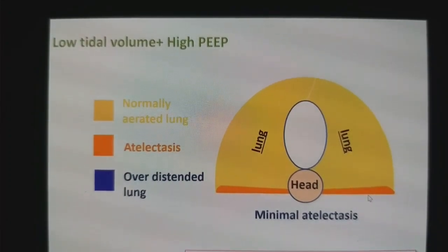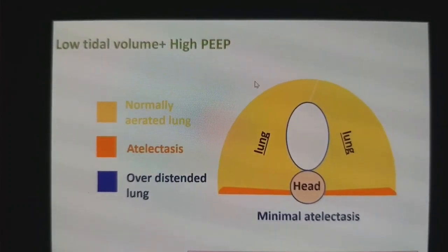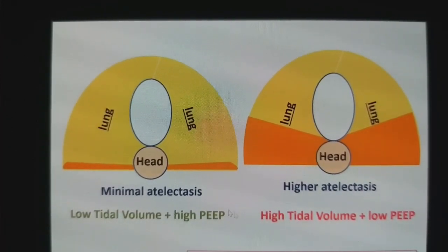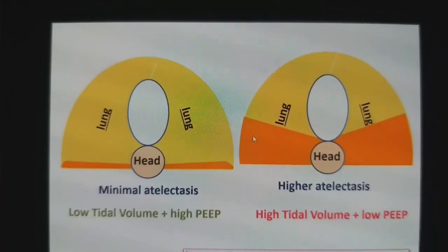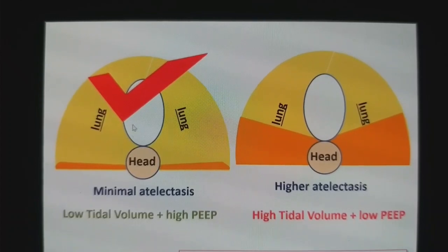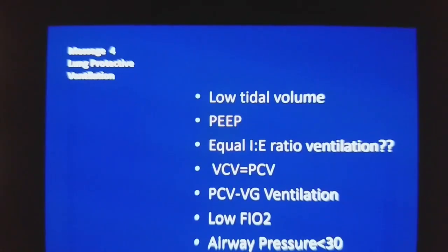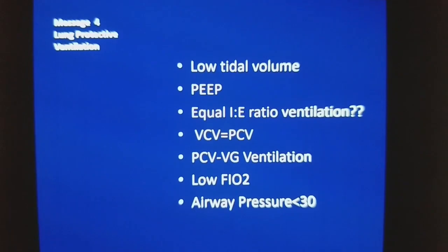That is the optimal method of ventilating a patient in the OR — low tidal volume with high PEEP. Look at this comparison: low tidal volume with high PEEP shows normal aeration, whereas high tidal volume with low PEEP shows the atelectatic area. So this is the optimal technique of ventilating a patient in the OR. Lung protective ventilation means: low tidal volume of 6 mL per kg predicted body weight, high PEEP, equal ratio ventilation in obese patients, and normal ratio ventilation in thin or normal weight patients.